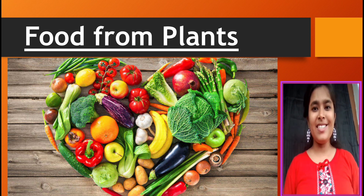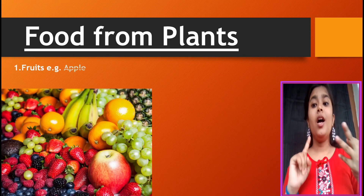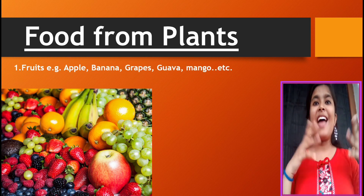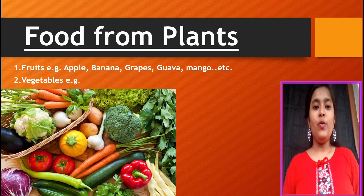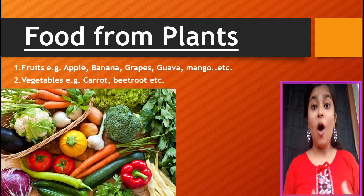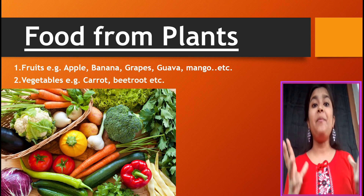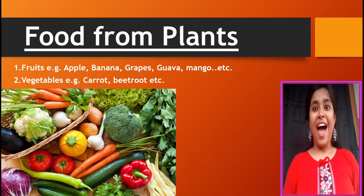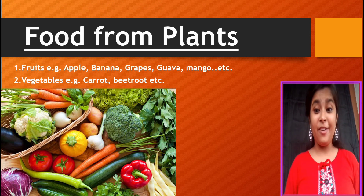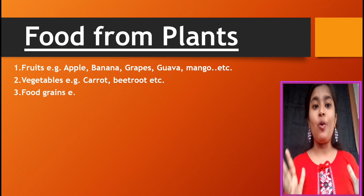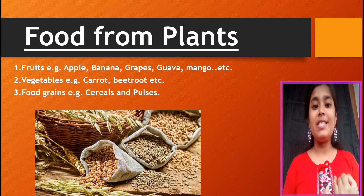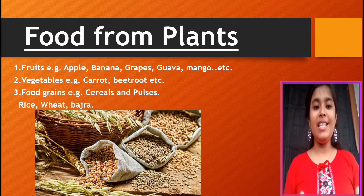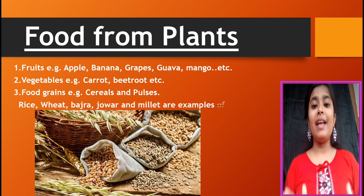Now we will study about food from plants. Plants produce a variety of fruits such as apples, bananas, grapes, guava and mango — there are so many juicy fruits. We can also make juice from vegetables such as carrots and beetroot, which are very good for our health. We also get food grains from plants, for example cereals and pulses.